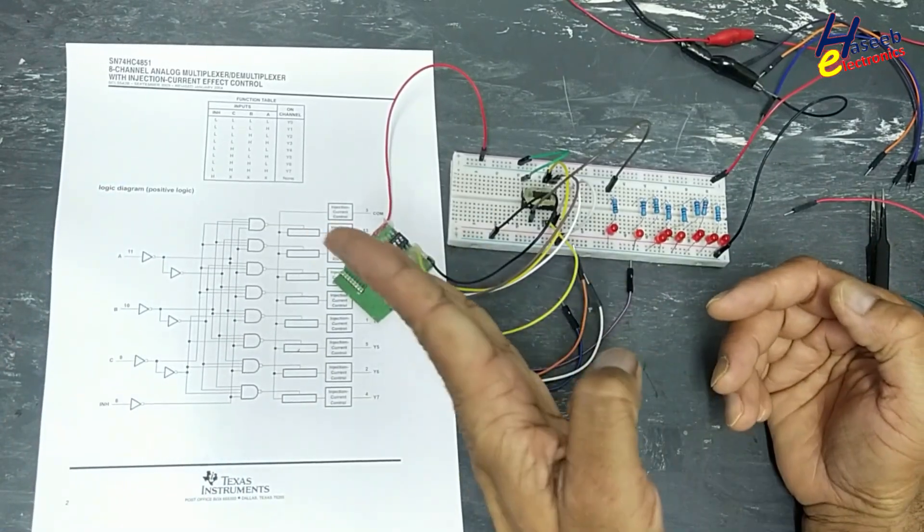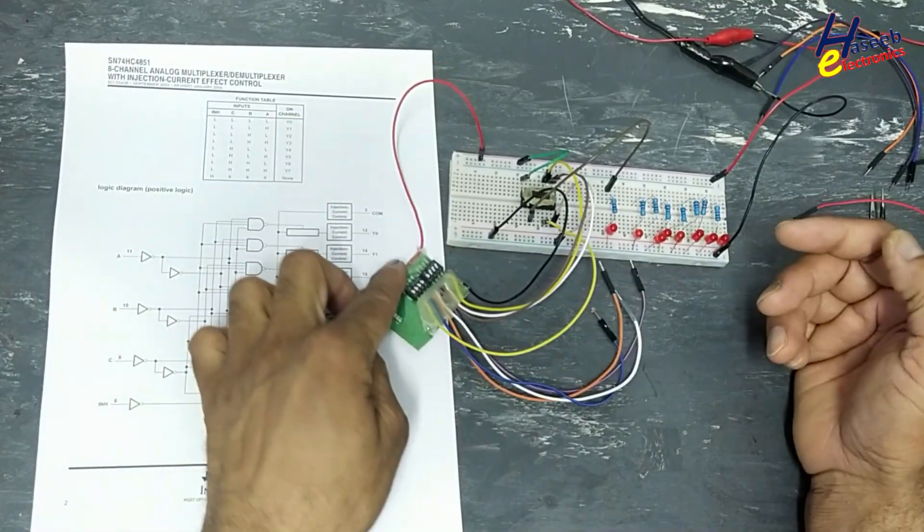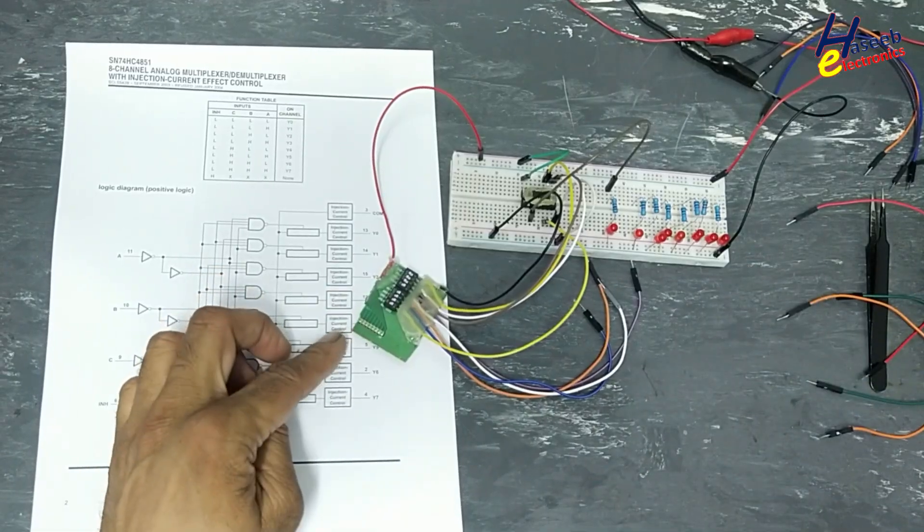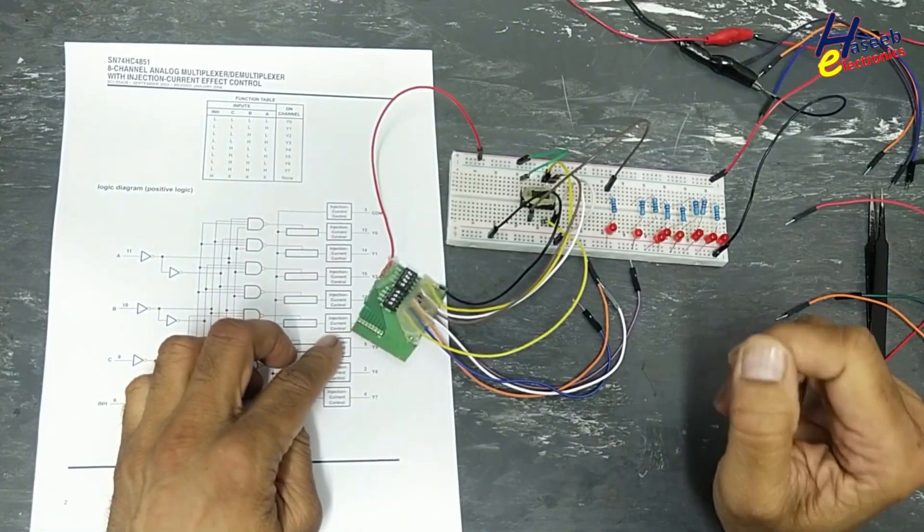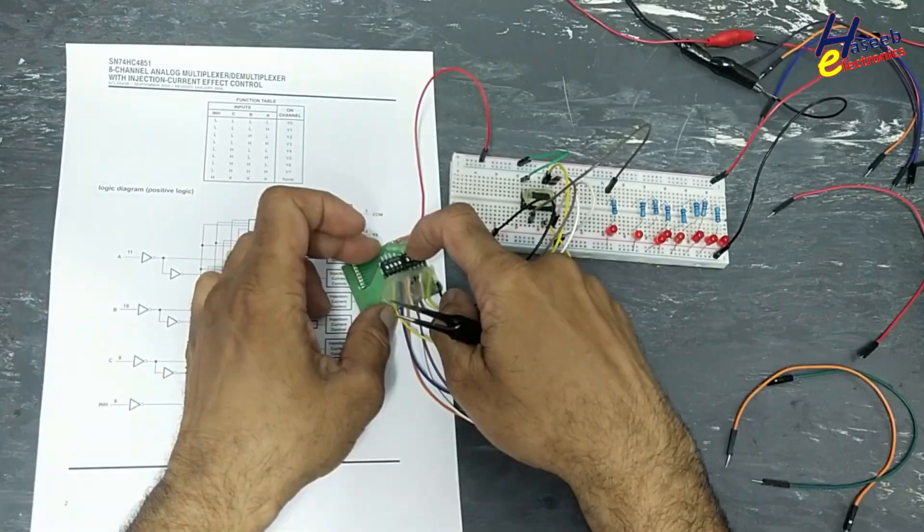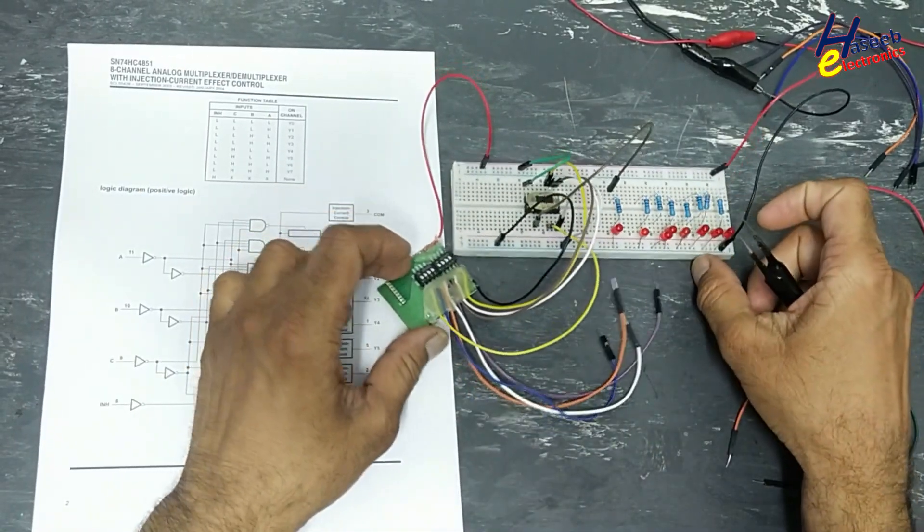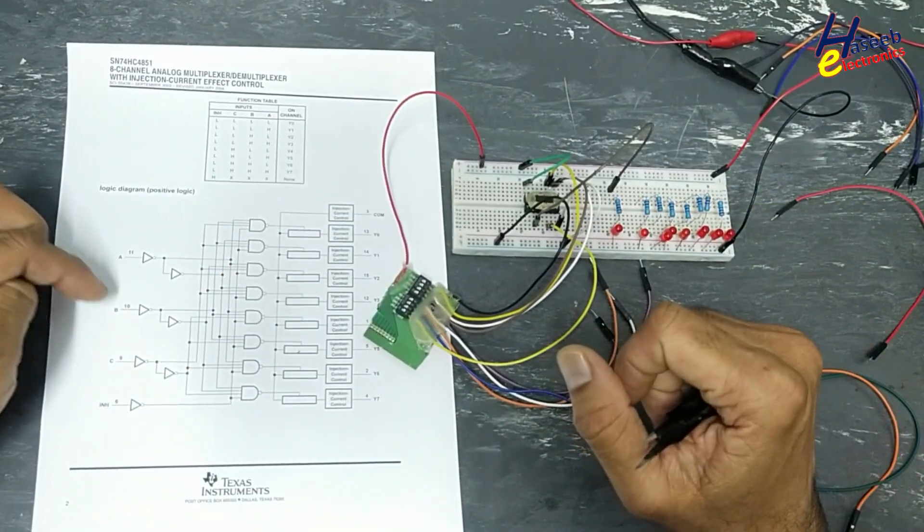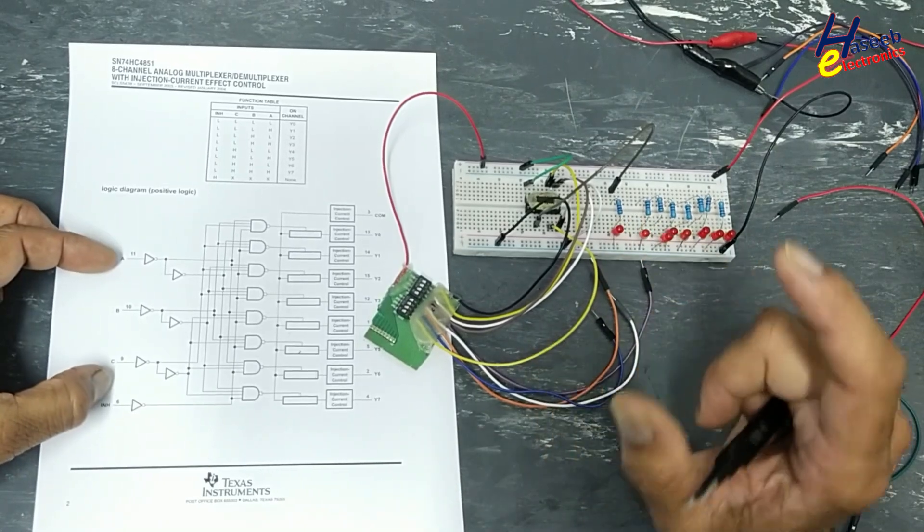And we are taking output from pin number three. Before this, we injected input at pin number three and we took output from other pins, selected pins. But now we will take output from pin number three. When inhibit is low, A, B, C address inputs are low.